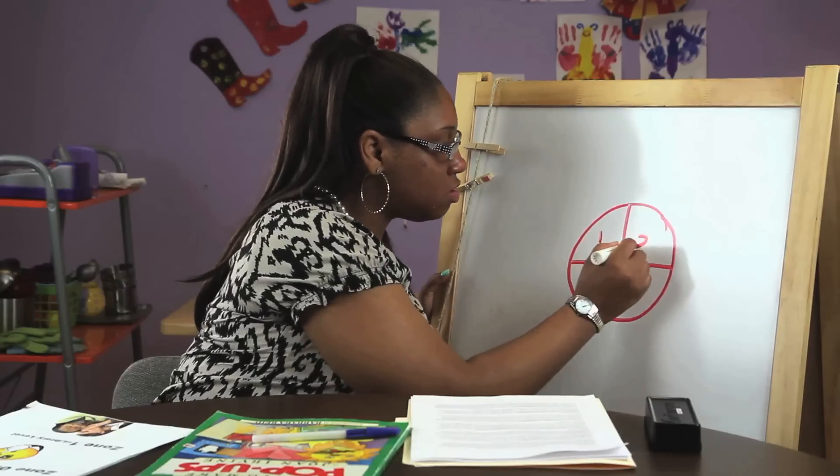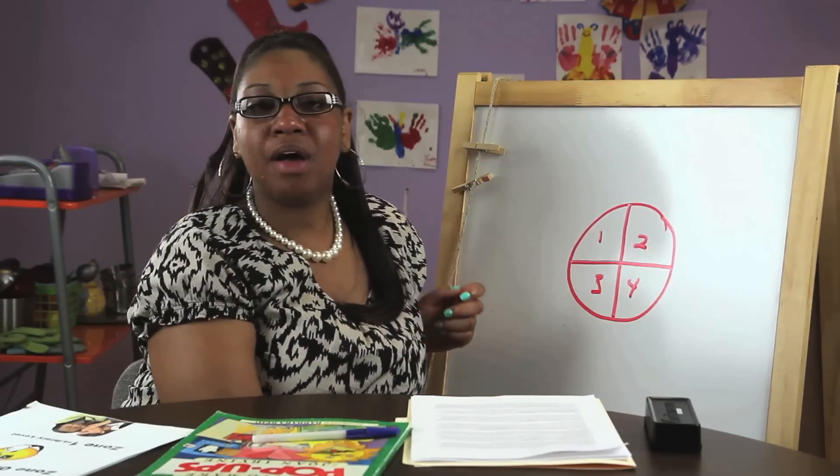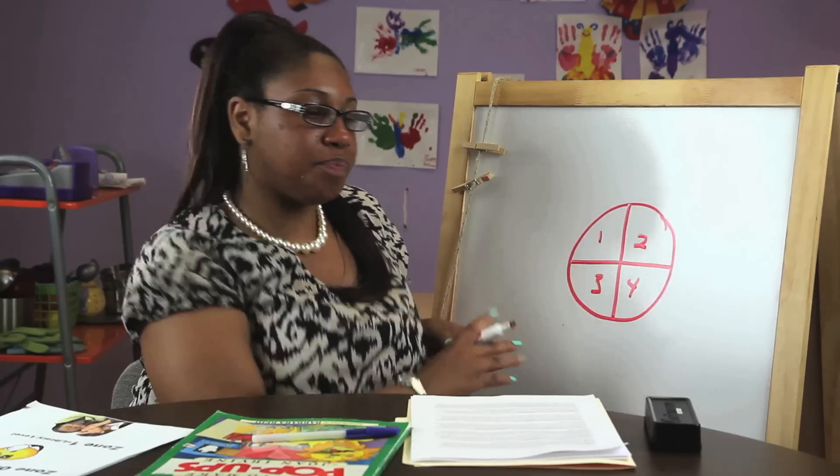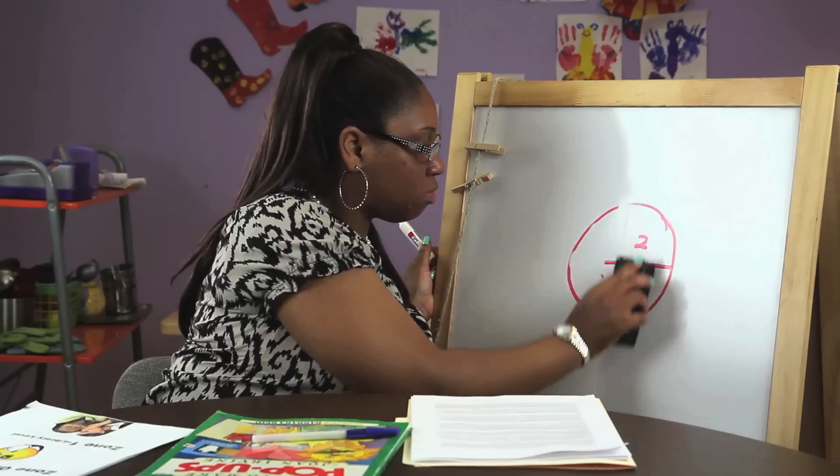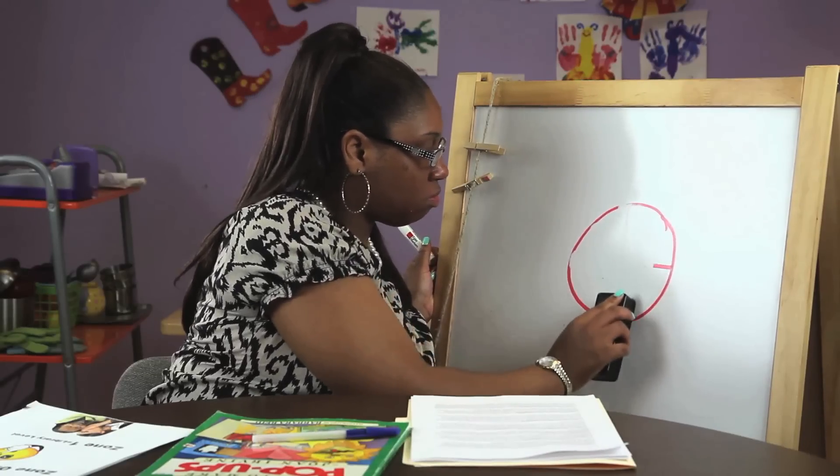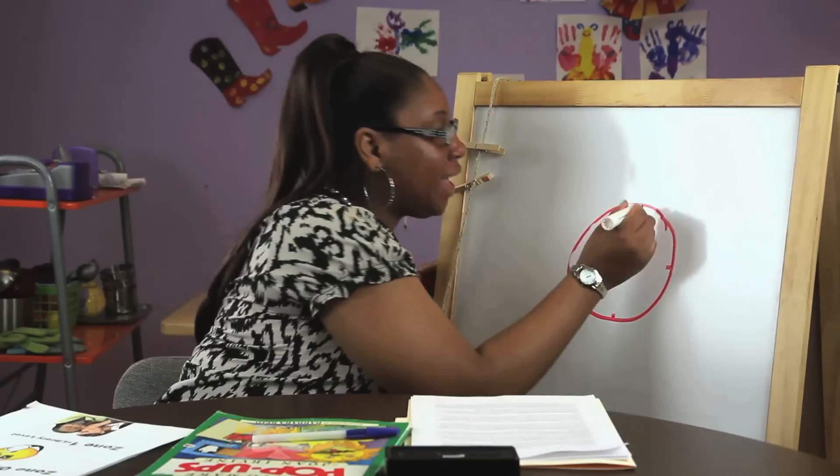One, two, three, four. But also explain that if we take the lines away, that it equals a whole pie again.